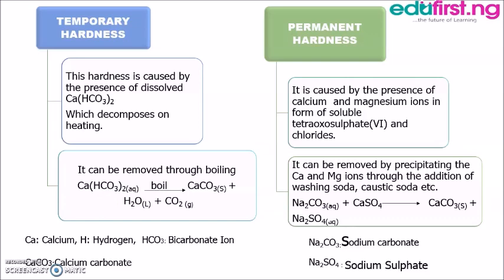Temporary hardness can be removed through boiling, after which the water can be used in our homes. Permanent hardness of water is caused by the presence of calcium and magnesium ions in the form of soluble sulfates and chlorides — that is, calcium sulfate (CaSO₄) or magnesium sulfate (MgSO₄). Permanent hardness can be removed by precipitating the calcium and magnesium ions through the addition of washing soda, caustic soda, and other chemicals.